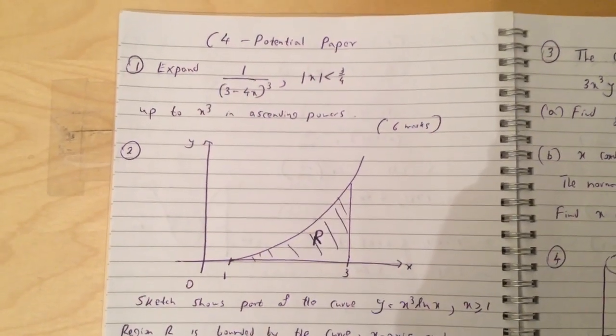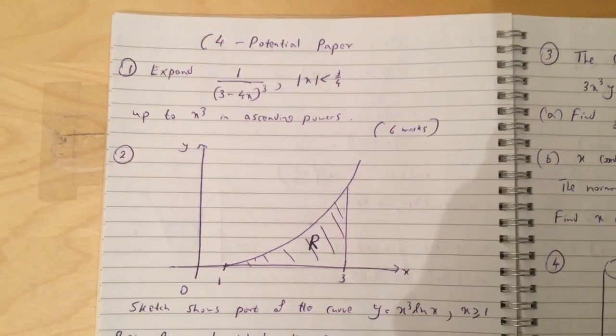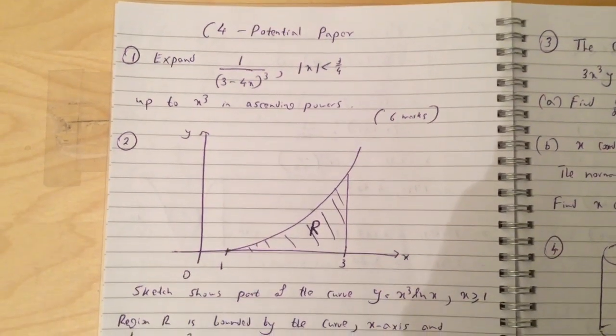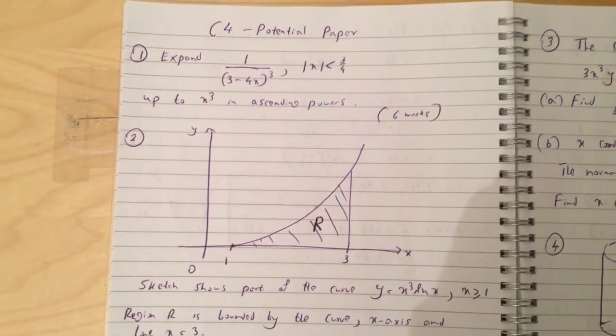Okay guys, this is the C4 potential paper. Question 1: Expand 1 over 3 minus 4x all to the cube up to x cubed in ascending powers.